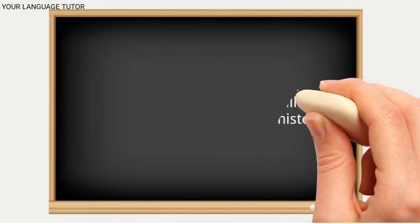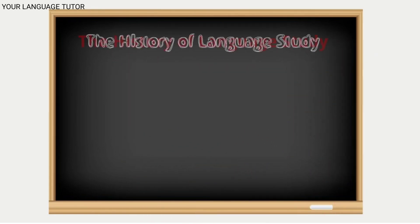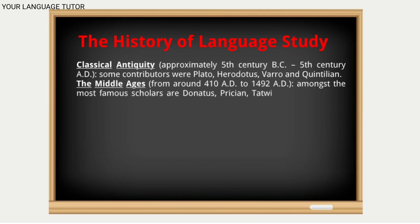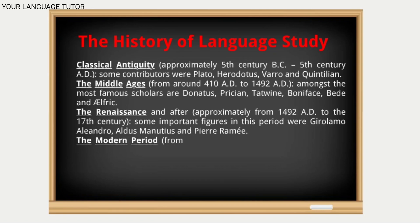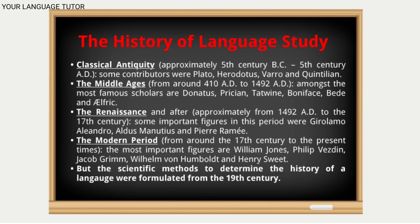If we talk about the study of language history, we have a period called classical antiquity — a first study going from the fifth century before Christ. It's a very long period in which we have Greek philosophers, and then more and more philosophers. So the fifth century into the middle ages.